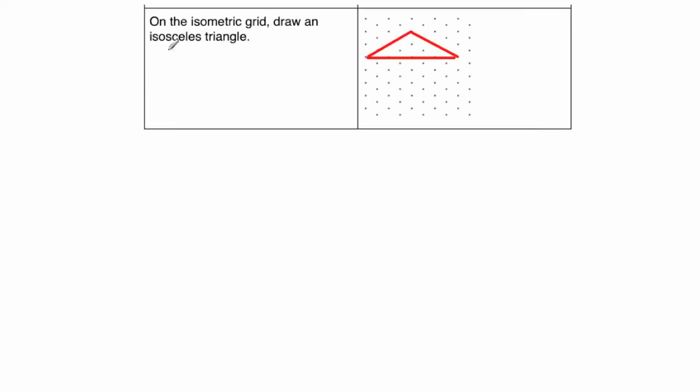OK, and our last question. So our last question says, on the isometric grid, draw an isosceles triangle. So this is the isosceles triangle that I've drawn. And it looks something like that. And that's it. Thank you.